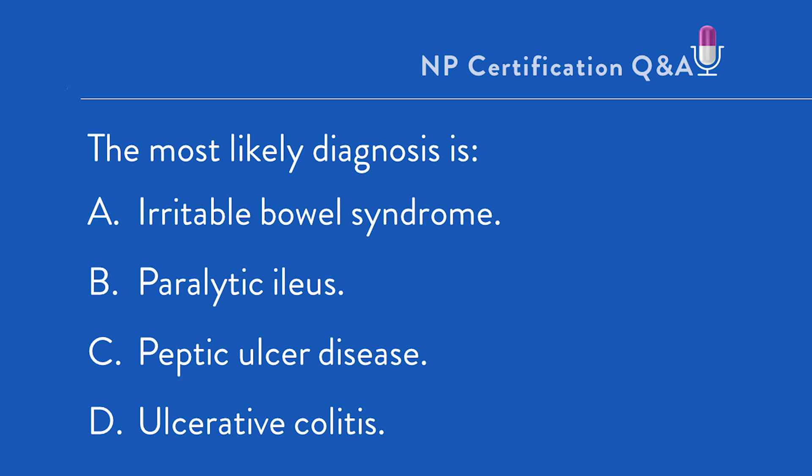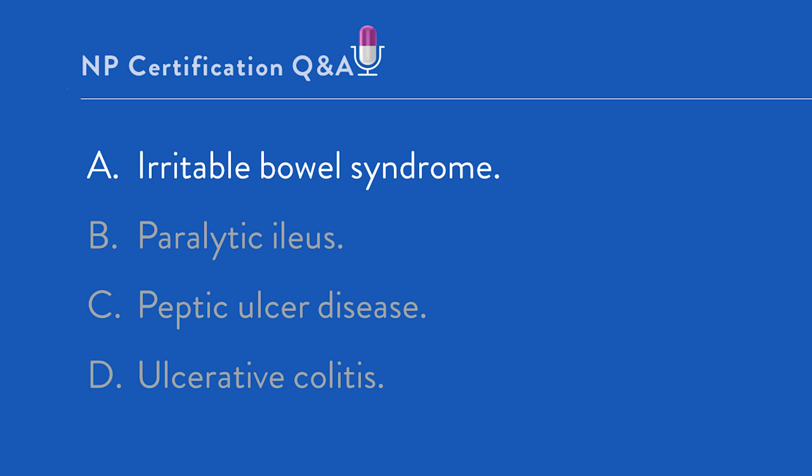Where do you start in a question like this? First, you should determine what kind of question it is. This is a diagnosis, or differential diagnosis question, focused on the analysis and synthesis of patient data with the goal of choosing the most likely, most appropriate diagnosis. What you want to do is determine probabilities based on the patient's symptoms, history, and risk categories. The most likely diagnosis here is option A, irritable bowel syndrome.